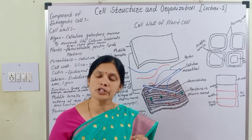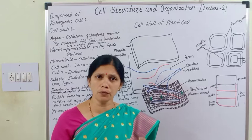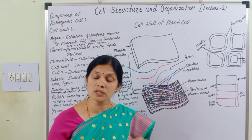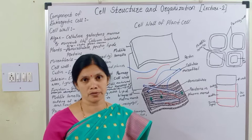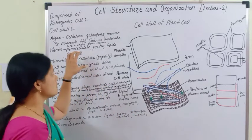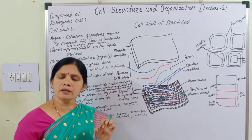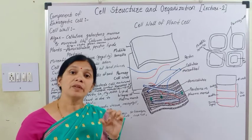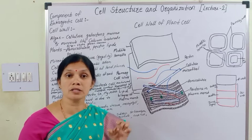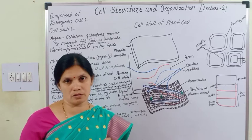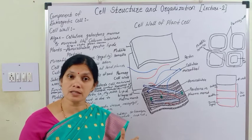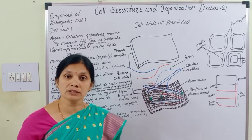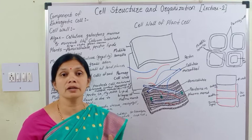This cell wall is formed from different components. If you observe the plant cell, mostly in plants the cell wall is formed from cellulose, hemicellulose, and pectin compounds. This cell wall is present in plants as well as fungi cells, and this outer protective covering is also present in some protists.